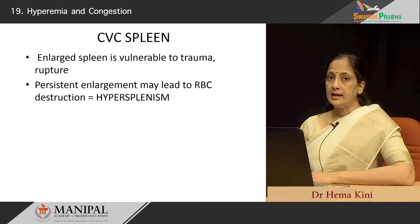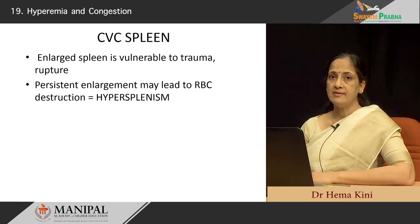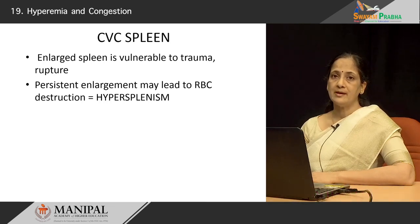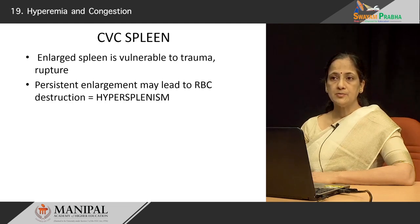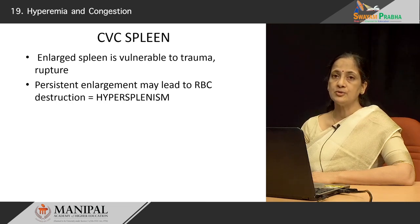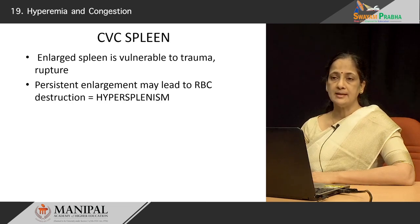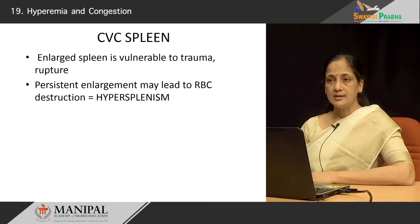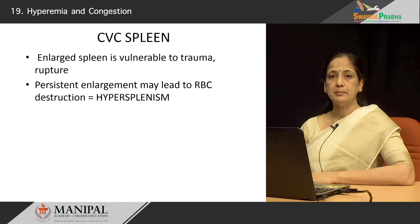In CVC, the enlarged spleen can be moderate to markedly enlarged and is very friable. Therefore, it is prone to rupture even with minor trauma. Persistent enlargement of the spleen with stagnation of blood as it passes through that enlarged congested spleen results in destruction of the blood cells and cytopenias in the peripheral circulation. This hyperfunctioning of the spleen is referred to as hypersplenism.